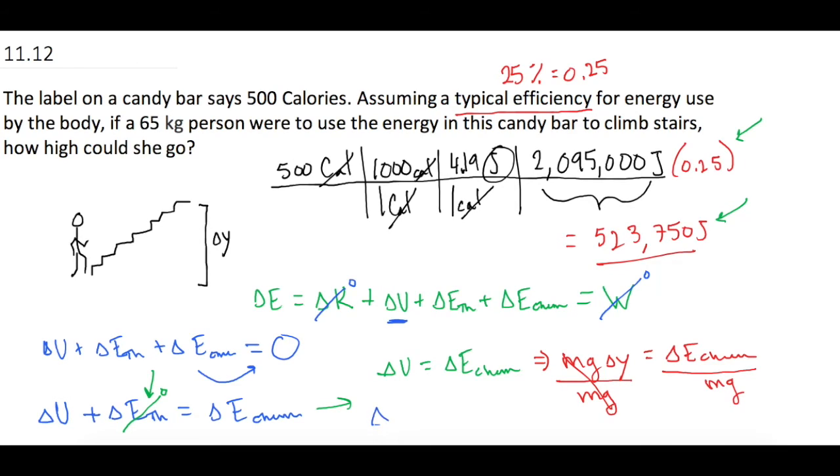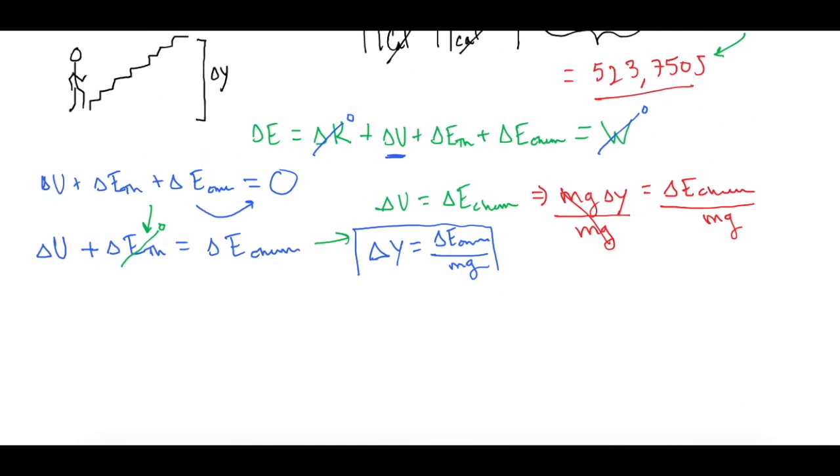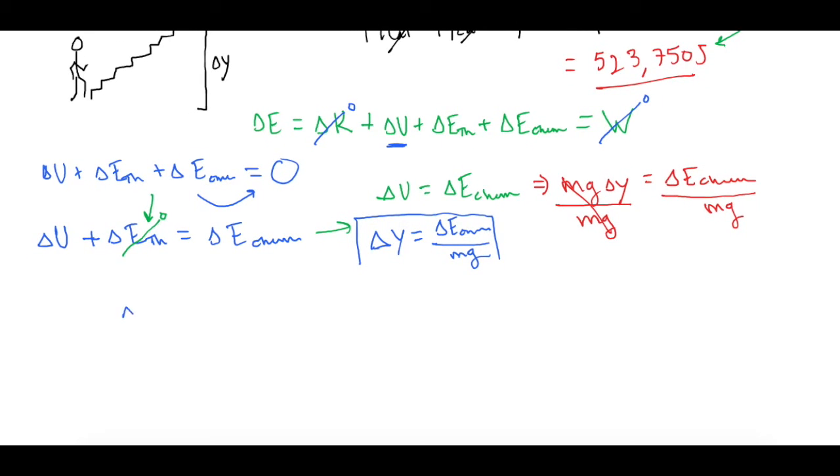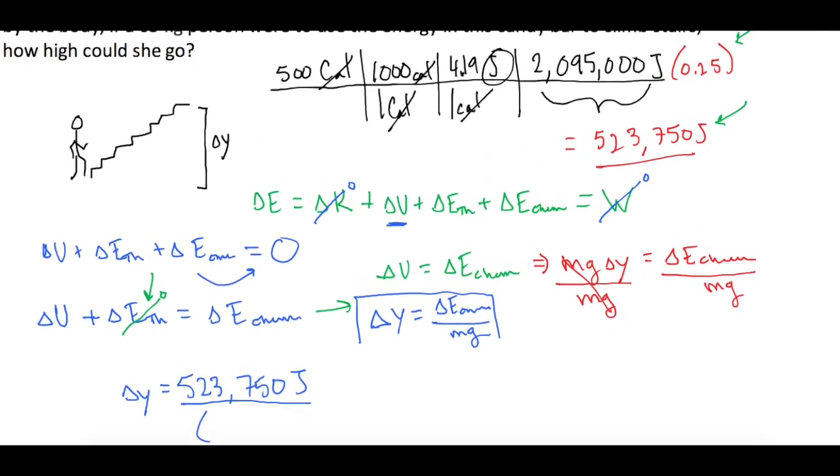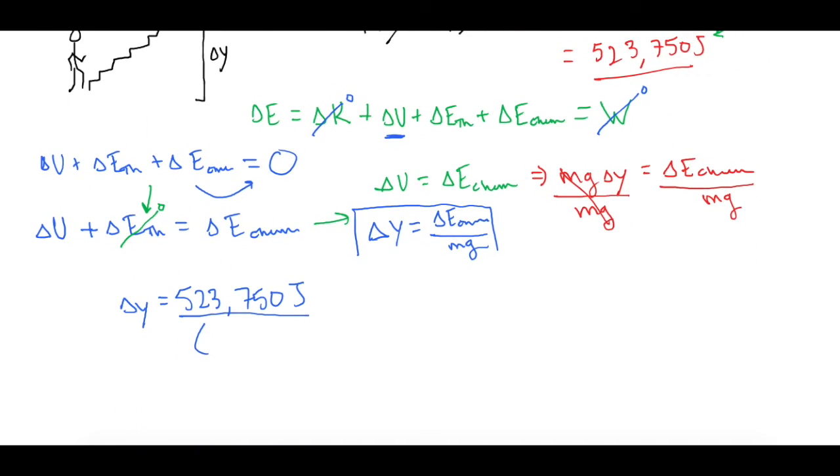Delta Y is equal to change in chemical energy divided by mass times gravity. So, now, let me give us a little more room, and let's just plug it in. So, we figured out that there is 523,750 joules that we can use of the chemical energy to do work. We're going to divide that. Let's see, there's 65, right? Yeah, 65 kilograms. 65 kilograms times 9.8. Times 9.8 gives us 822.214 meters.